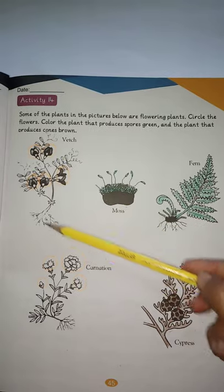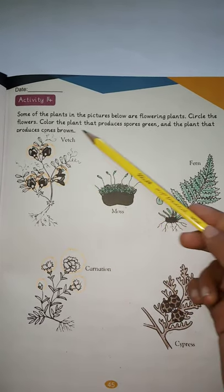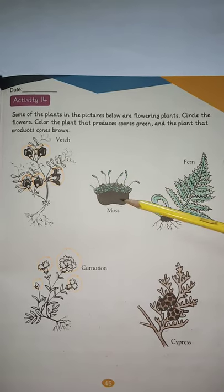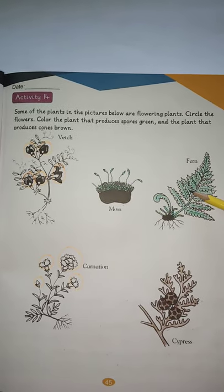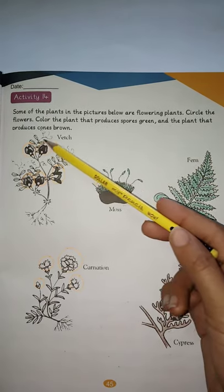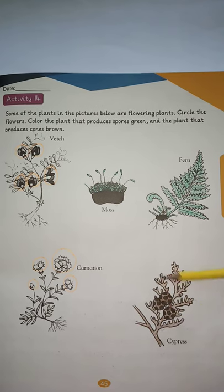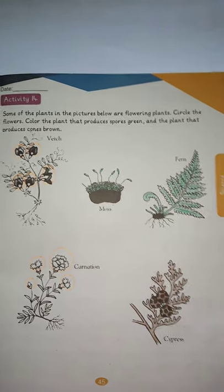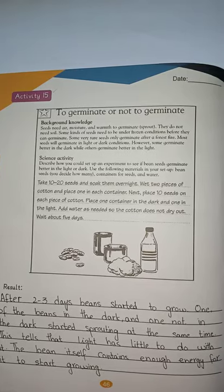In Activity number 14, circle the flowering plants — these are the flowers of the plant. Color the plant that produces spores — moss and fern produce spores, so fill them with green color. Color the plant that produces cones brown — cypress produces cones, so fill that plant with brown color.